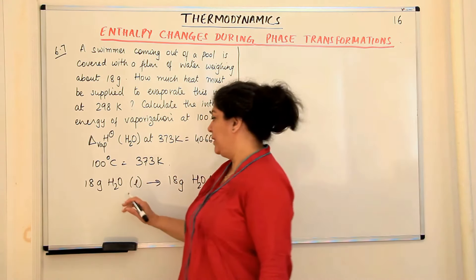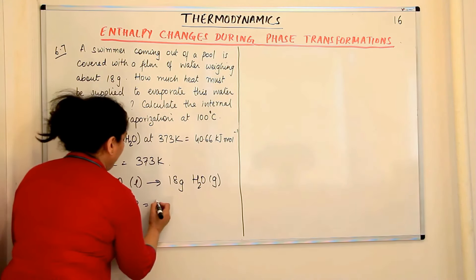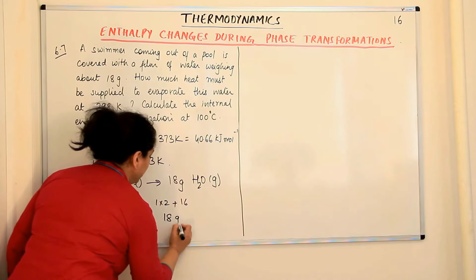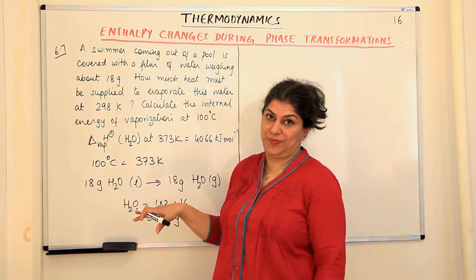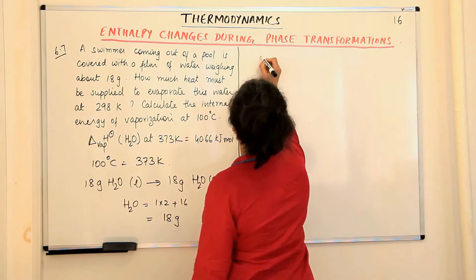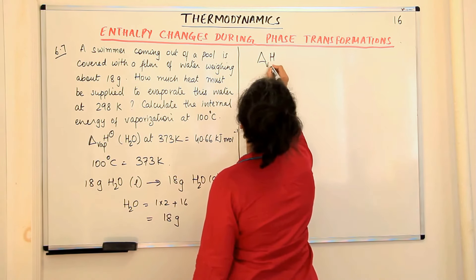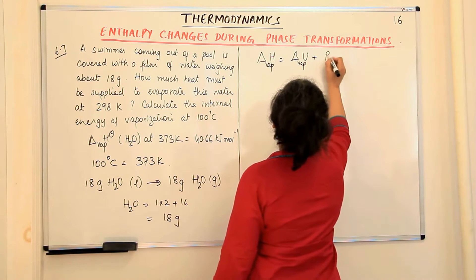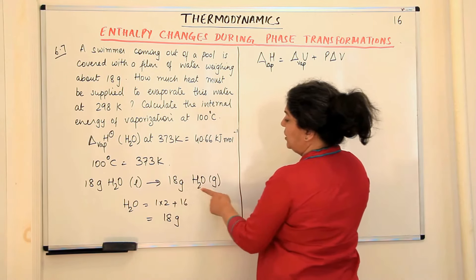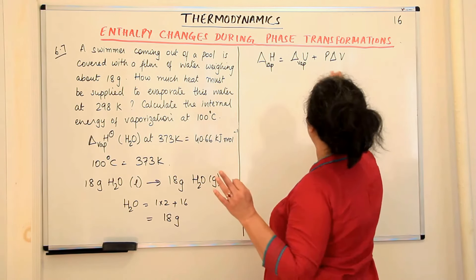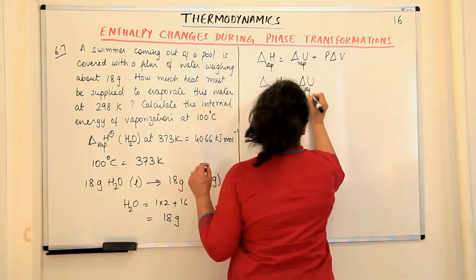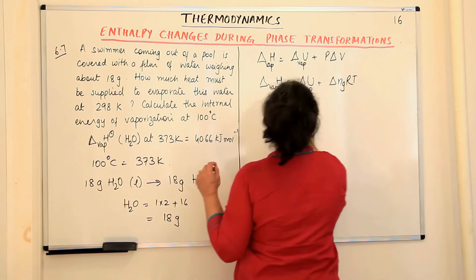So 18 grams of water equals one mole — the equation is already a molar equation and the stoichiometric coefficient is one. To calculate the internal energy of vaporization, we start from: ΔH_vap = ΔU_vap + PΔV. Since we assume the water vapor behaves as an ideal gas, we use ΔH_vap = ΔU_vap + Δn_g RT. We have been asked for ΔU, and we already have the value of ΔH°_vap.